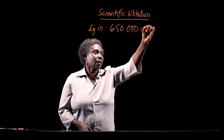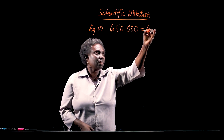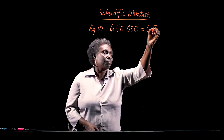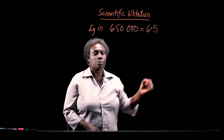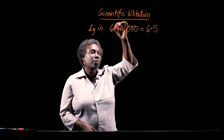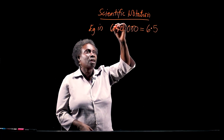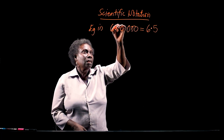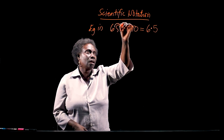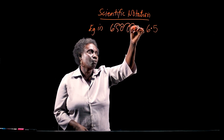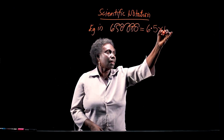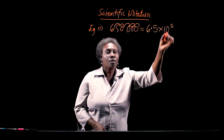The first significant figure is 6 and the second significant figure is 5. So our decimal point must be between the first and the second significant figure, and we count the number of places we move to the right. We have 6.5, and we count the number of places we move to the right: 1, 2, 3, 4, 5. So when we write that, that is 6.5 times 10 to the power of 5.